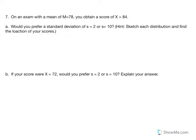Number 7. On an exam with a mean of 78, you obtain a score of 84. Would you prefer a standard deviation of s equals 2 or s equals 10? Sketching the distribution and finding the location of your score will aid in understanding which distribution you'd rather belong to. We have distributions with a mean of 78 that vary in their standard deviation.